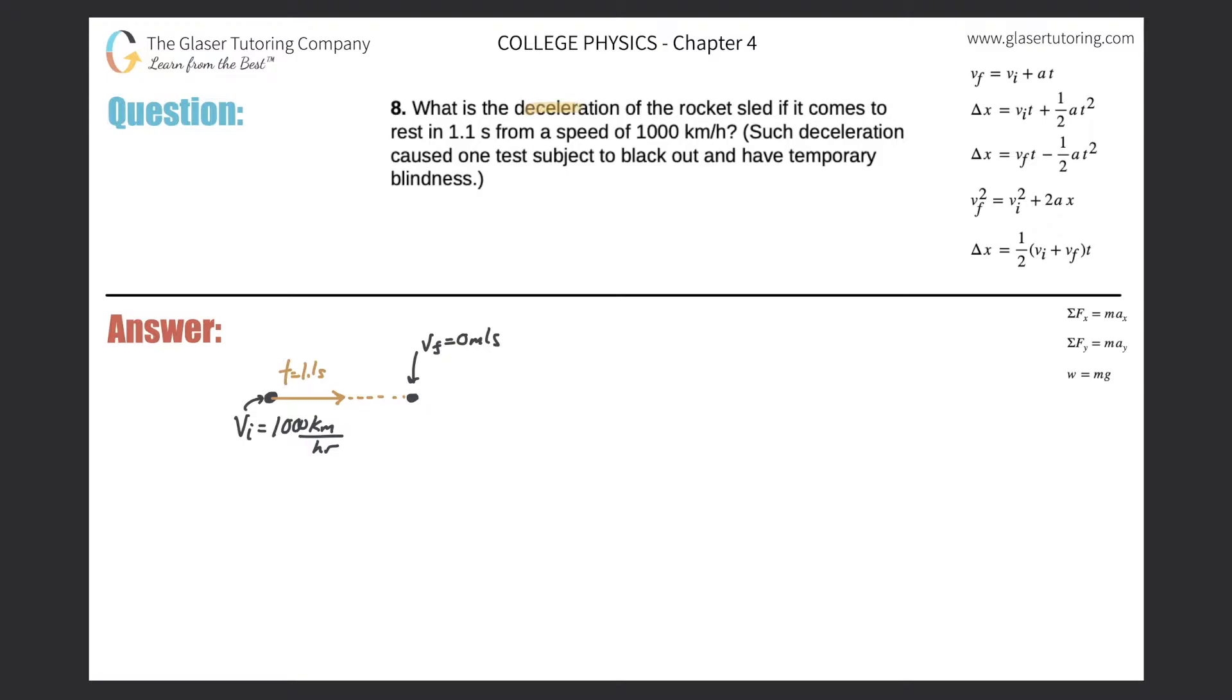Problem 8: What is the deceleration of the rocket sled if it comes to rest in 1.1 seconds from a speed of 1,000 kilometers per hour? Such deceleration caused one test subject to black out and have temporary blindness.